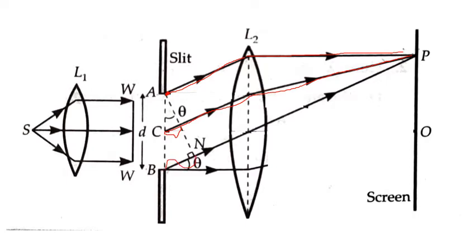When there is an extra path difference of lambda, at the center of the triangle the extra path difference is lambda by 2. So let us compare the light coming from point A and the light coming from point C, where the light from point C has traveled an extra path of lambda by 2.